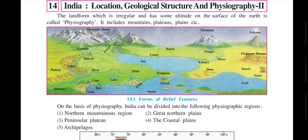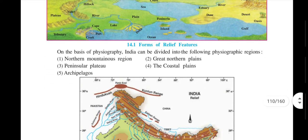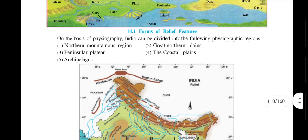Physiography refers to the landform which is irregular and has some altitude on the surface of the earth. It includes mountains, plateaus, and plains. When we talk about the physiography of India, it is divided into five parts.